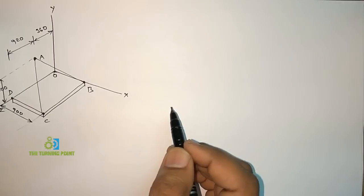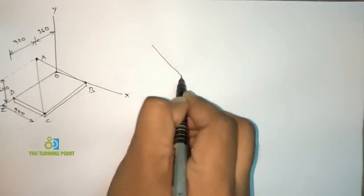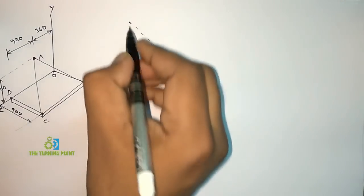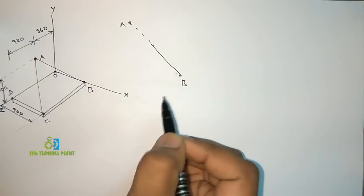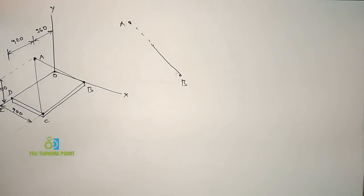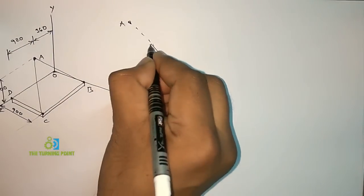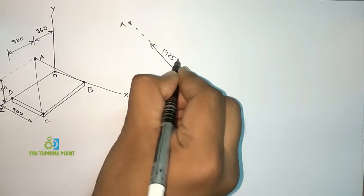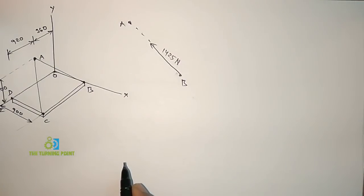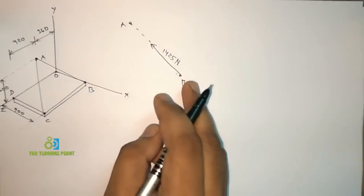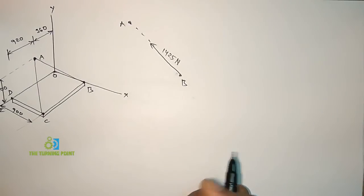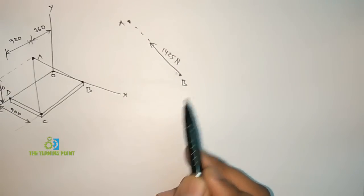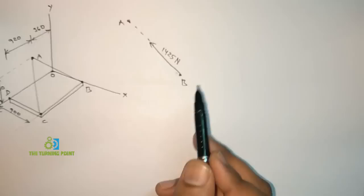When we consider equilibrium of point B, point B has a connection with point A by means of a rope or string. Along the string there will be a tensile force, which means it will be directed away from the point. The tension is given as 1425N. To calculate the force components, first we calculate the coordinates of the two points, then the position vector, then the unit vector, and finally the force vector.